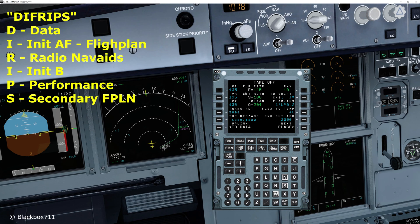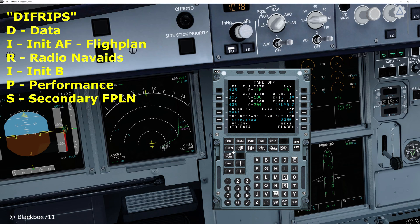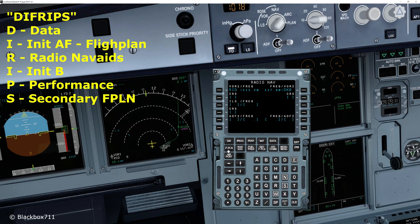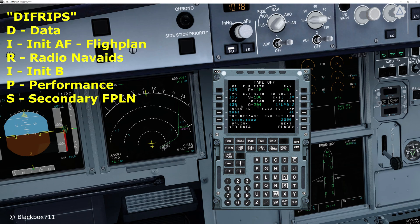At the moment, we've finished our preparations by using our well-known DIFRIP mnemonic. We've checked that the data is up-to-date, filled out the Init A page, completed the flight plan page, had a look at the RATNAV page and selected the necessary VORs for departure. Then the Init B page with the latest actual zero fuel weight, and of course the performance page. Once that's all completed, we get to the final point, which is S for secondary flight plan.